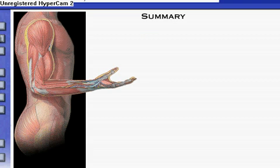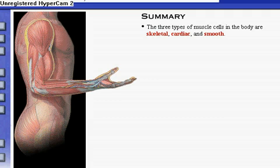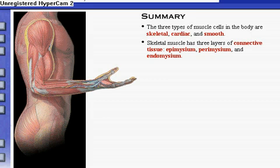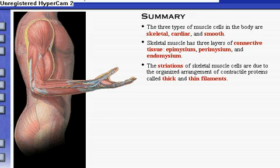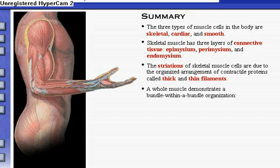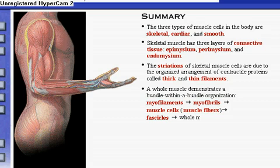Here's a summary of what we've covered. The three types of muscle cells in the body are skeletal, cardiac, and smooth. Skeletal muscle has three layers of connective tissue: epimysium, perimysium, and endomysium. The striations of skeletal muscle cells are due to the organized arrangement of contractile proteins called thick and thin filaments. A whole muscle demonstrates a bundle within a bundle organization, from myofilaments, to myofibrils, to muscle cells, to fascicles, to the whole muscle.